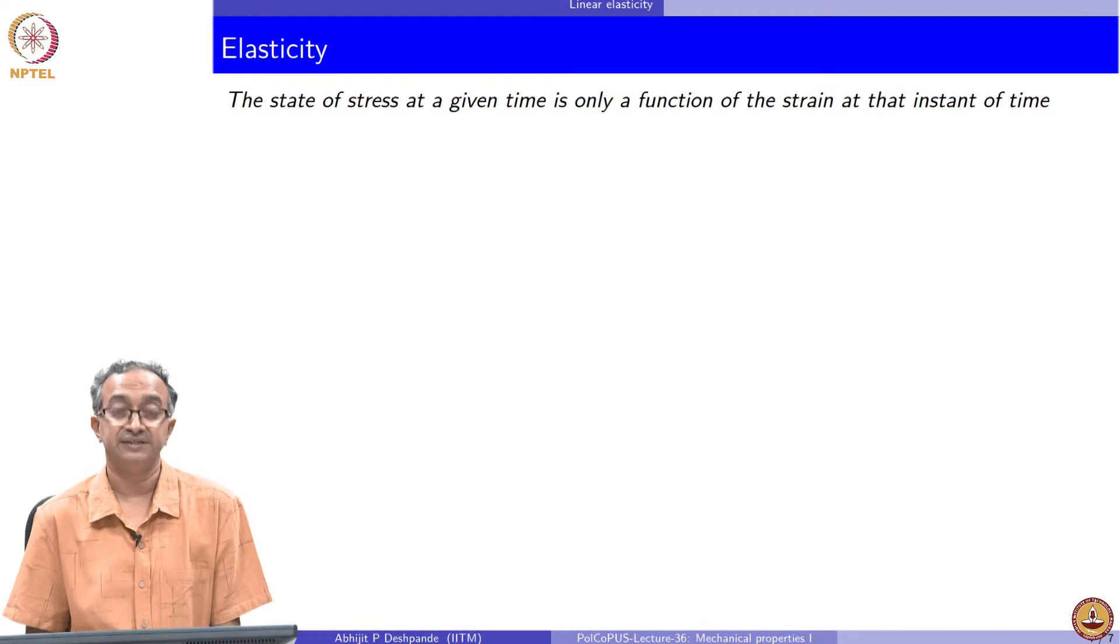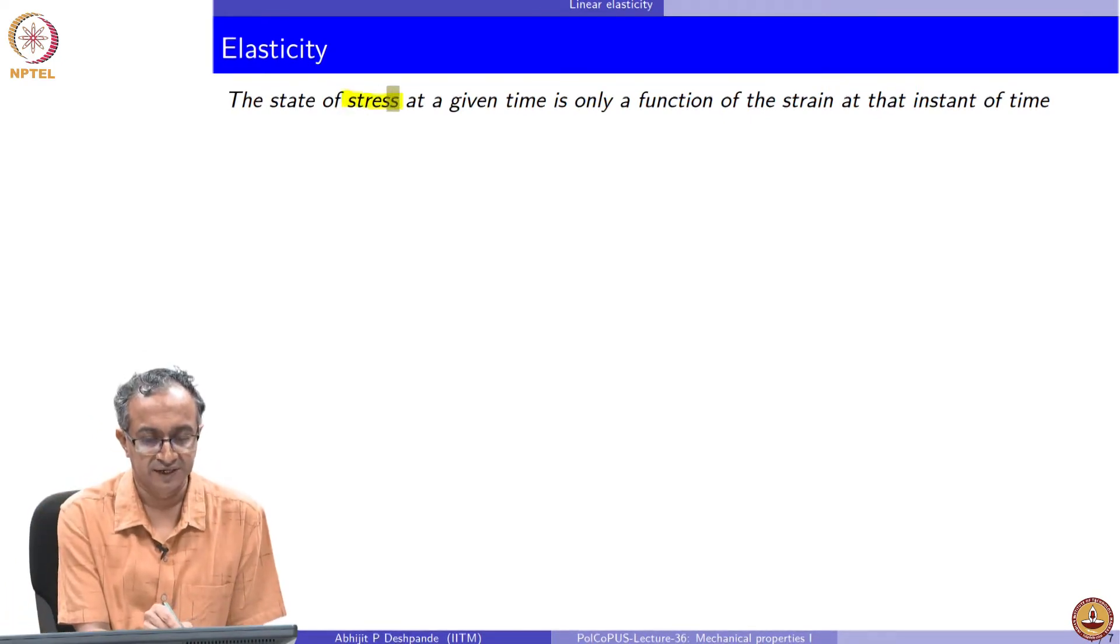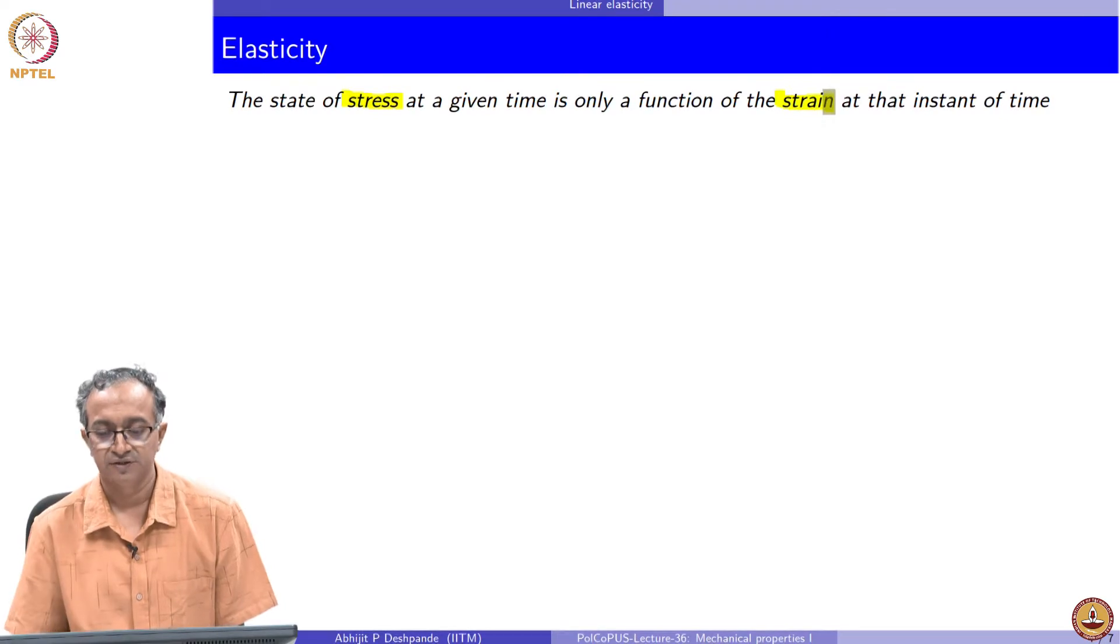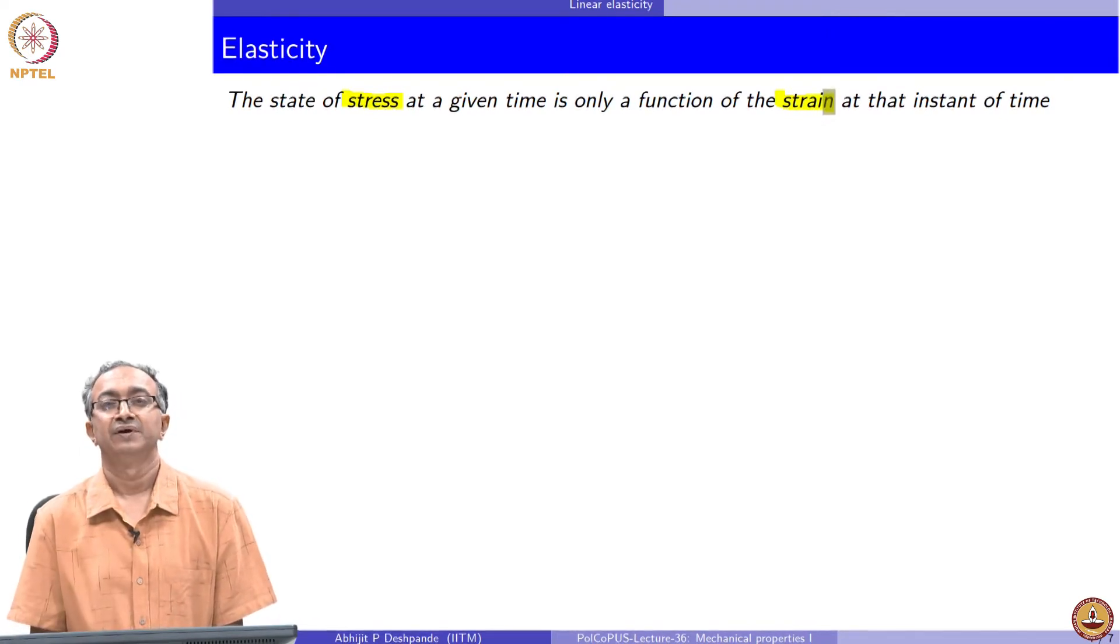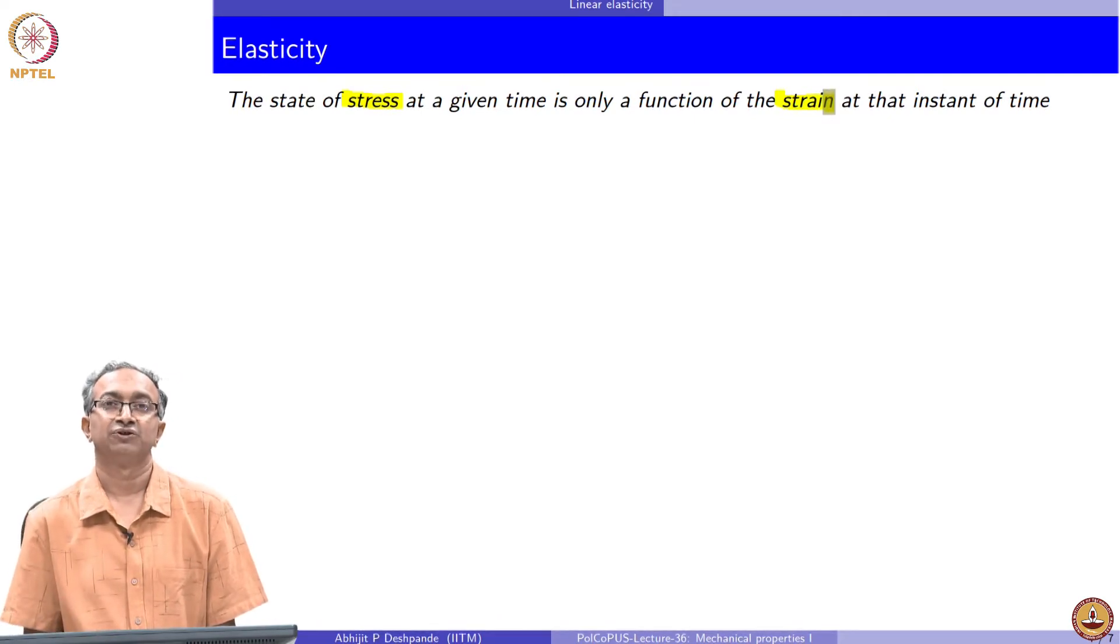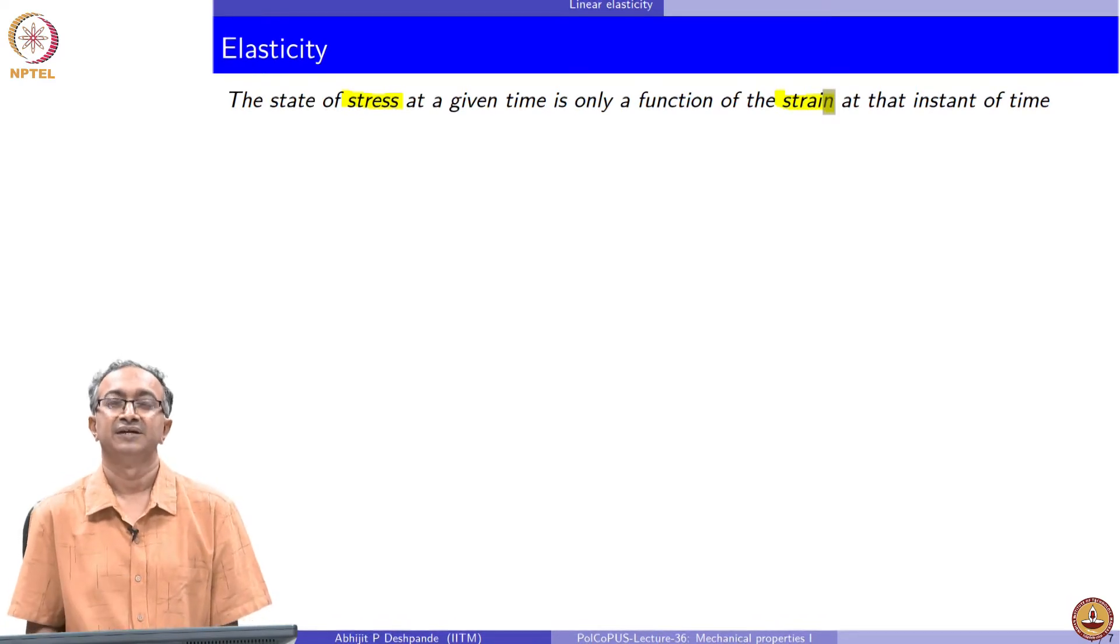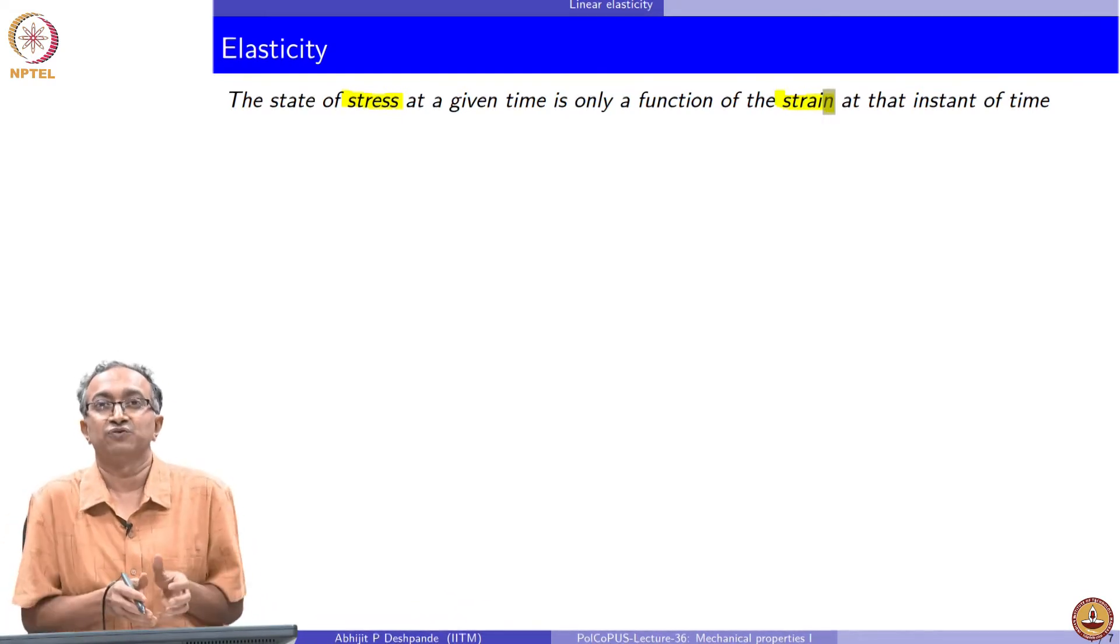Let us start with elasticity and defining it. Elastic materials are those materials where stress at any given instant of time is related to the strain at that instant of time. This implies that whatever was the history in terms of the deformation or no deformation is irrelevant. If I know the stress in the material, I immediately know the strain in the material. If I specify the strain in the material, I immediately know the stress in the material. It does not matter how fast the stress is being applied. It does not matter how fast the strain is being applied. It does not matter whether the material was undeformed earlier or deformed earlier.